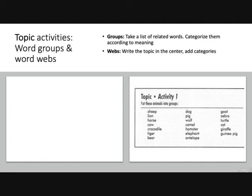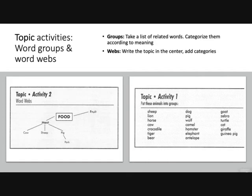A second activity is to use word webs — I love having a word wall in my classroom. You write the topic in the center, add categories around it like food, fruit, meat — and where does meat come from? Then you can pull in your animals: cow, sheep, pig.